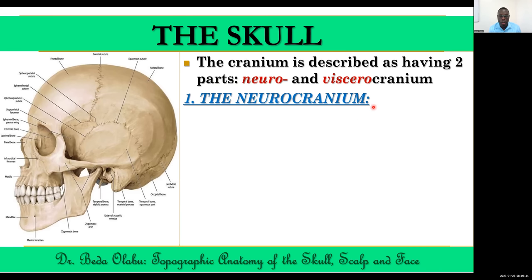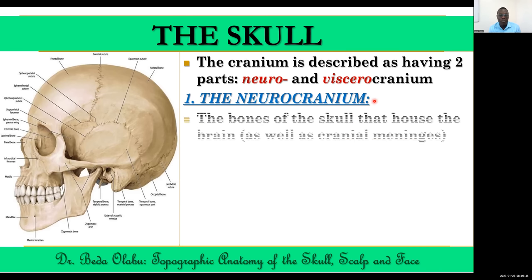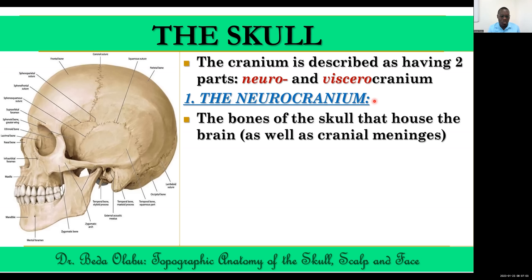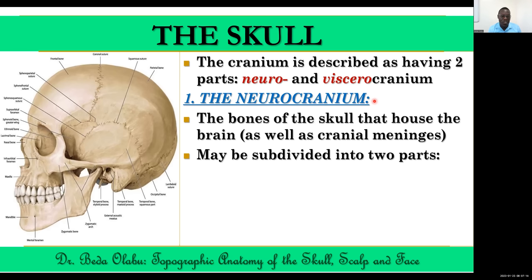The neurocranium refers to the bones of the skull that house the brain. Because they house the brain and the brain is covered by cranial meninges, the neurocranium also houses the cranial meninges. Even cerebrospinal fluid, found within or around the brain, is also enclosed by the neurocranium. We can further divide the neurocranium into two parts.